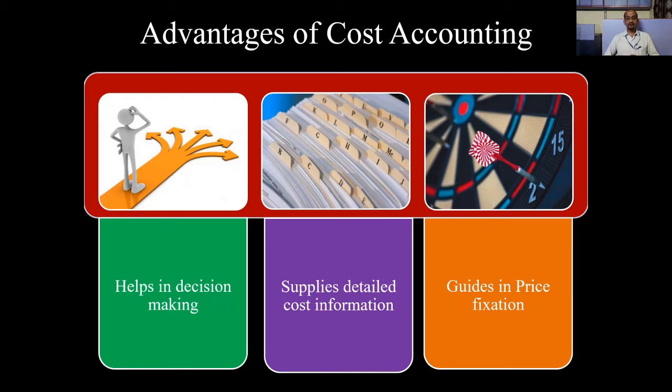In previous videos, we have already seen price contains three aspects: cost, profit, and tax. So cost is very important. This selling price, both in normal conditions and abnormal conditions, cost accounting is helpful for the management to take the decision and accordingly they can fix the price of a particular product to cope up with the market conditions.